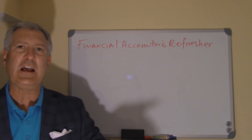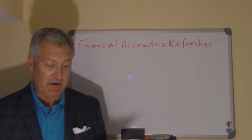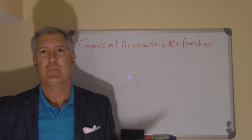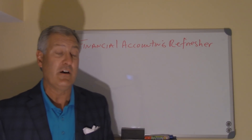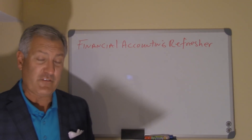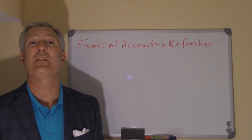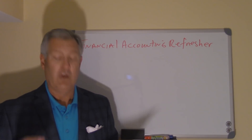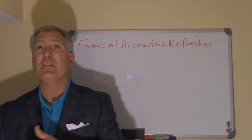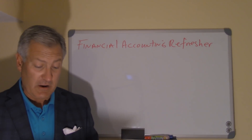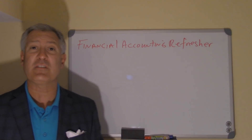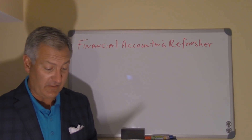There are some skills you need to have in order to be successful with the statement of cash flows. One of them is understanding how to record the sale of an asset — material learned in financial accounting. There are four steps in the preparation of the journal entry associated with the sale of an asset: step one, record the cash received; step two, remove the asset from the books; step three, remove the accumulated depreciation associated with that asset; and step four, record the gain or loss on the sale.